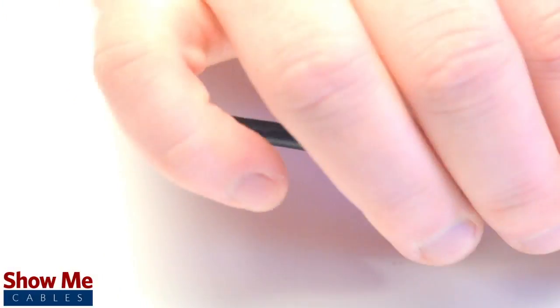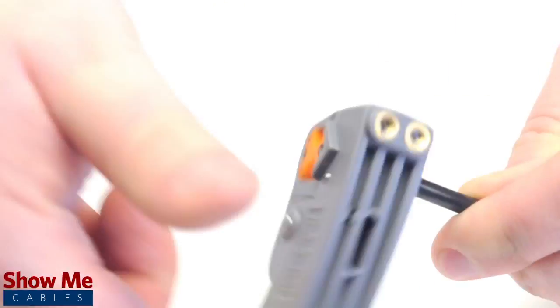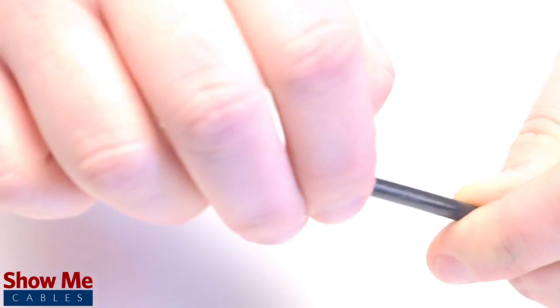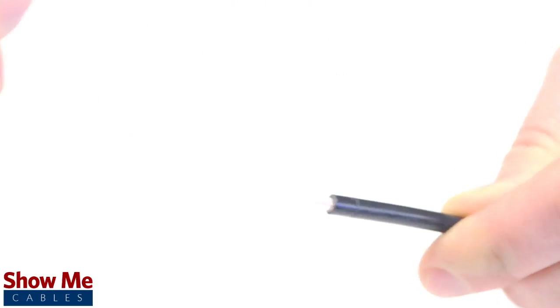Start by inserting the ferrule over the outer jacket of the cable. Then, using your cable stripper, strip back the outer jacket and dielectric. The advantage of using a cable stripper is that it will strip back the jacket and dielectric at the same time.